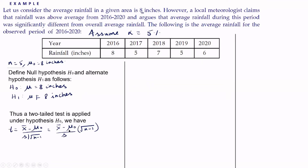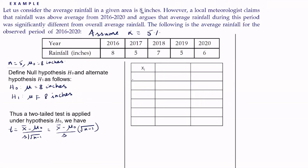First let us find x̄. We draw a table with the sample observations xᵢ: 8, 5, 7, 5, 6. The summation of xᵢ, when we add all these, we get 31. So x̄ = Σxᵢ / n = 31 / 5 = 6.2. So we get x̄ = 6.2.